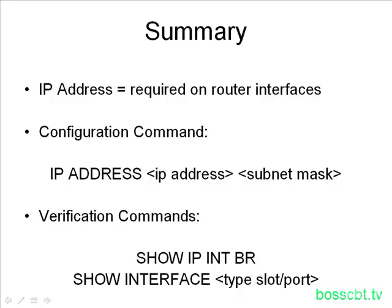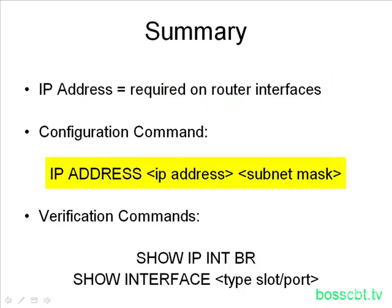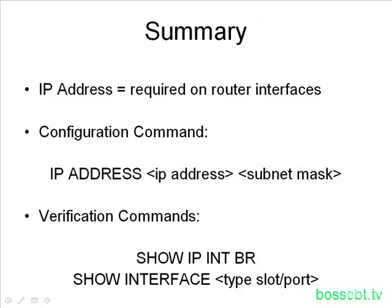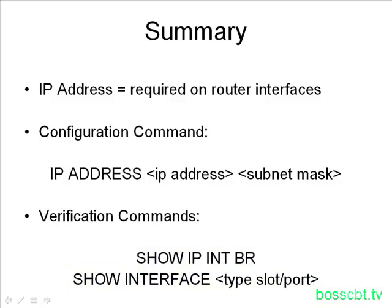To summarize: an IP address is required on a router interface if you want to send and receive traffic on that interface. To apply an IP address, go into interface configuration mode and type the command IP address, then state the IP address and the subnet mask you want to use. If you ever need to remove an IP address, issue no IP address in interface configuration mode and that will remove it. We also looked at verification commands: show IP interface brief and show interface, as well as the running configuration. That is how we configure an IP address on a router interface. Thanks for watching.